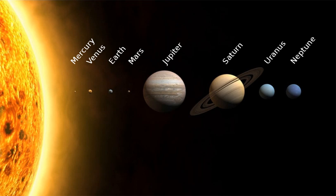Three of the four inner planets — Venus, Earth, and Mars — have atmospheres substantial enough to generate weather. All have impact craters and tectonic surface features, such as rift valleys and volcanoes. The term inner planet should not be confused with inferior planet, which designates those planets that are closer to the Sun than Earth is, i.e. Mercury and Venus.